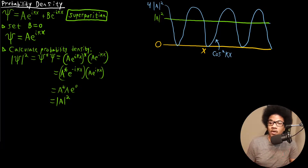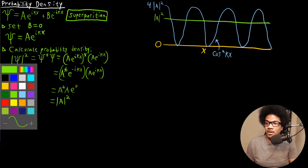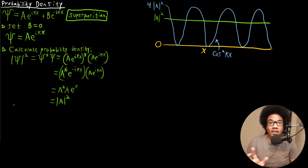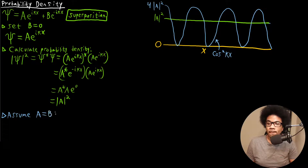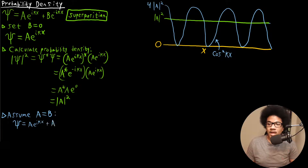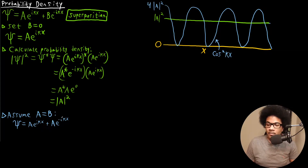Instead of removing one of the functions, we're going to assume that A and B are equal, keeping both functions present. If A equals B, our wave function becomes A e to the ikx plus A e to the negative ikx. We can factor out the constant A, leaving A times the quantity e to the ikx plus e to the negative ikx.